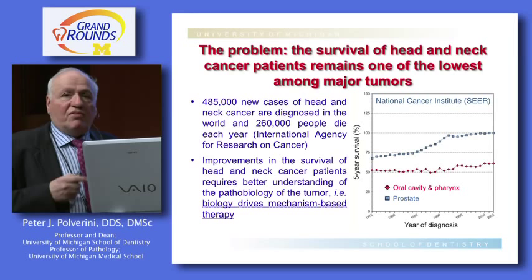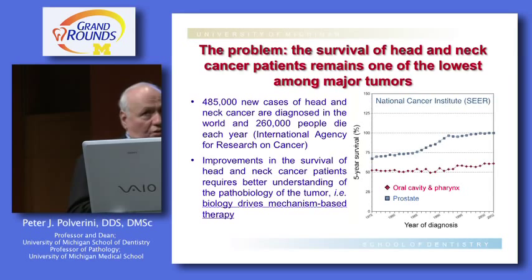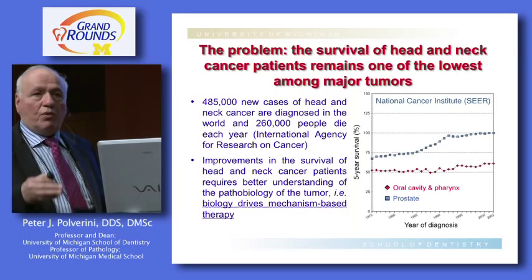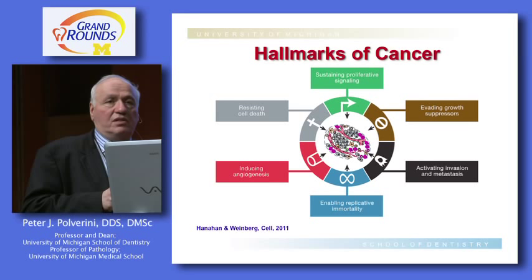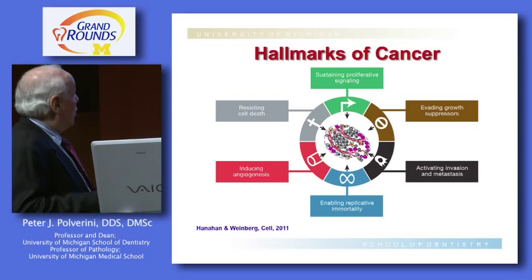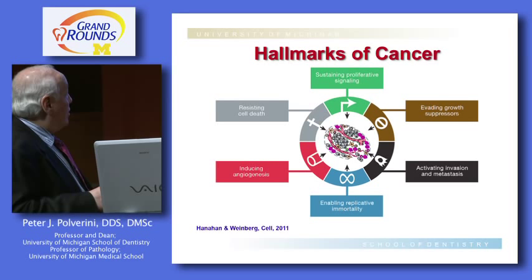What I'll do today is talk about an important biological process and how we want to target it therapeutically as a means of treating cancer. When you look at the hallmarks of cancer — a slide recently published by Douglas Hanahan and Robert Weinberg that outlines the major features defining cancer hallmarks — the one I want to focus on today is angiogenesis, which is a very pivotal response during tumor development.